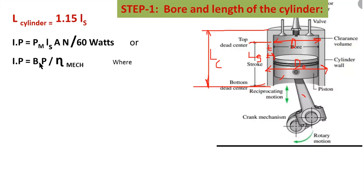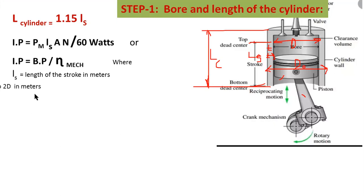Another formula for indicated power is IP equal to brake power divided by mechanical efficiency. If you know the BP and mechanical efficiency, from this formula you will get the indicated power. Then substitute this indicated power value into the first equation and you will get the value of LS. The stroke length L lies between 1.1 to 1.25 — up to 2 times the diameter of the bore.